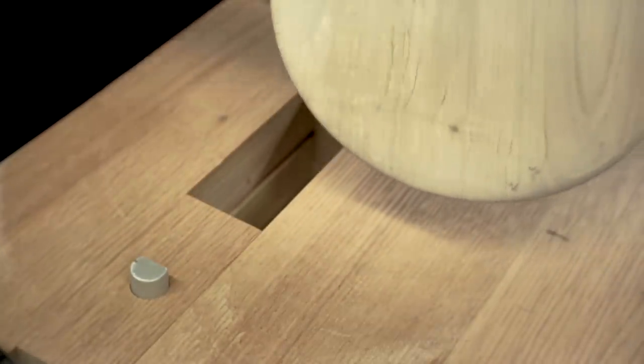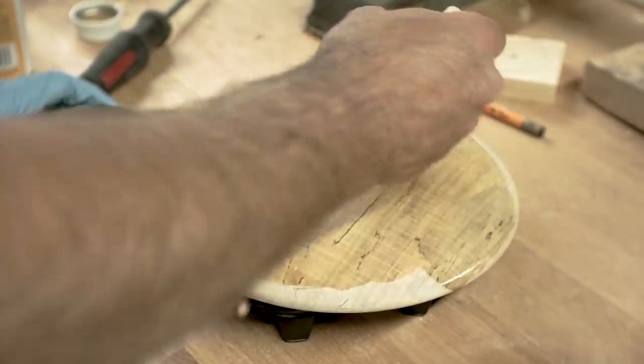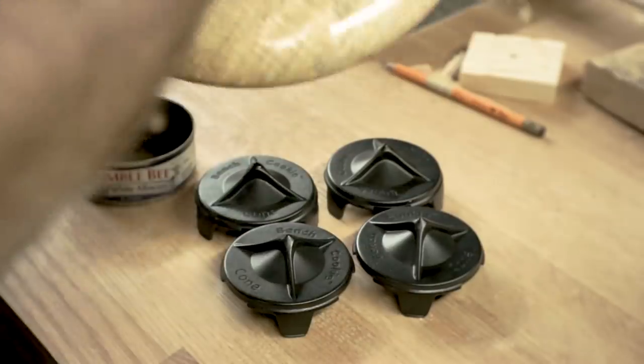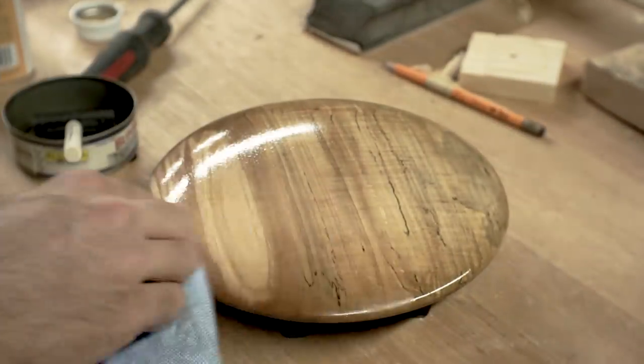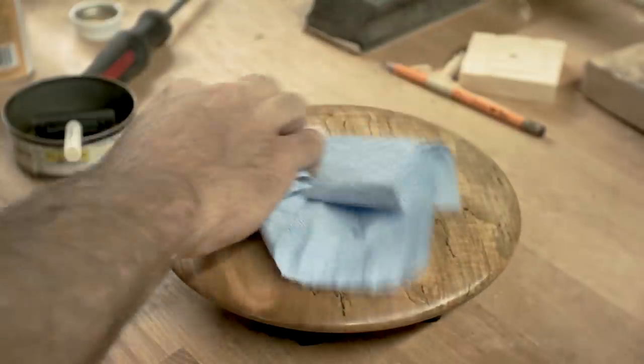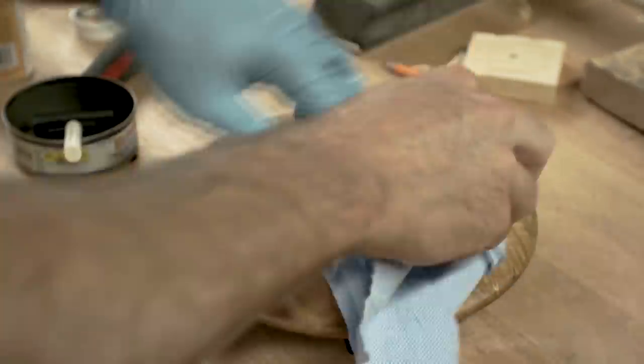Once I wound it up in the grits, then I finally went over it with some 400 grit sandpaper and then I oiled it with Waterlox. I usually do one heavy coat with the foam brush. I'll let it sit, let it soak in, then I wipe all the excess off with a rag.